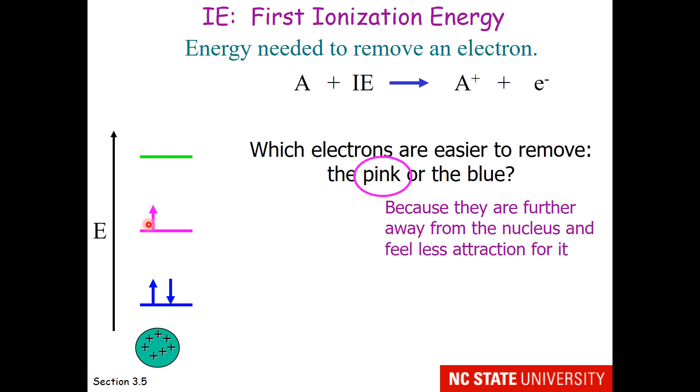So the pink ones are further away from the nucleus, so they have less attraction for the nucleus and are therefore easier to remove. So something with low ionization energy has electrons that are far from the nucleus. An element with high ionization energy has electrons that are close to the nucleus.